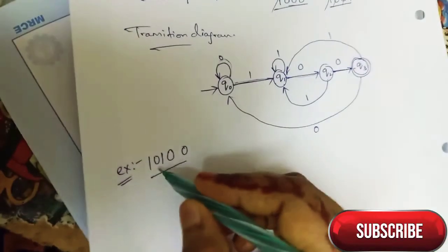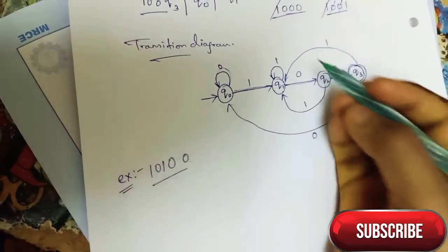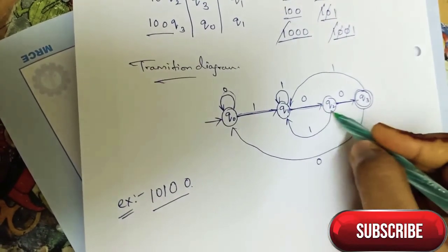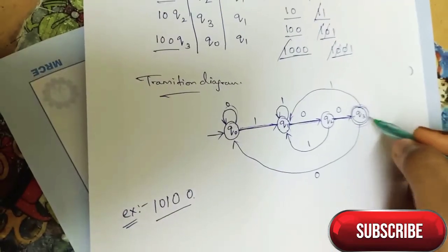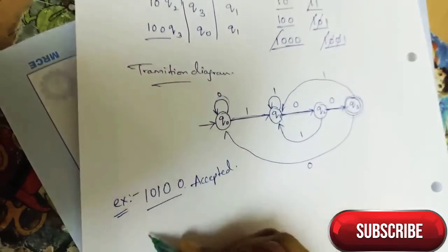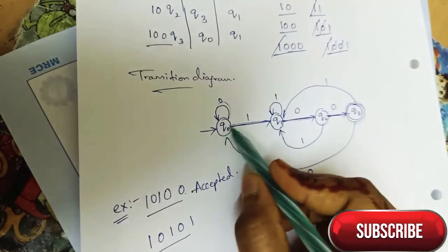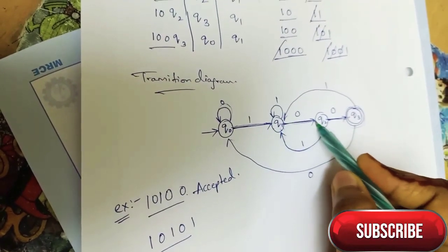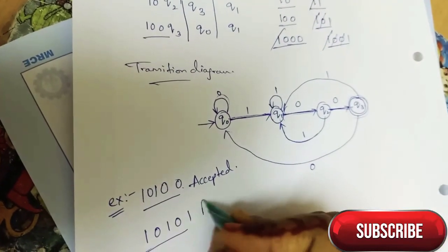Now we have to check whether it is correct or not. For example, if we take string 100100, it reaches final state, so it is accepted. If we take 101101, it is not a final state, so it is rejected.